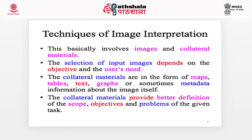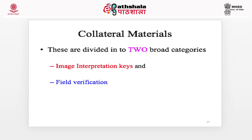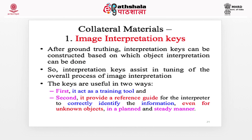Techniques of image interpretation basically involve images and collateral materials. The selection of input images depends on the objective and the user's need. Collateral materials are in the form of maps, tables, text, graphs, or sometimes even metadata information. Collateral materials provide better definition about the scope, objective, and problems of the given task. There are two kinds of collateral materials: interpretation keys and field verification. After ground truthing, interpretation keys can be constructed, based on which object interpretation can be done.